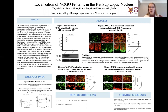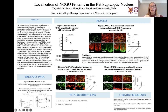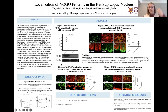Nogo stands for neuron outgrowth inhibitor, and we expected there to be significantly more nogo in the 125-day-old rat because that axonal sprouting is not occurring, rather than the 35-day-old rat. The opposite was found — there was significantly more nogo in the 35-day-old rat versus the 125-day-old rat, and we used beta-actin as a loading control so that we knew it wasn't a loading error.